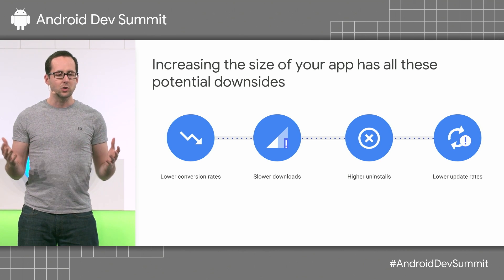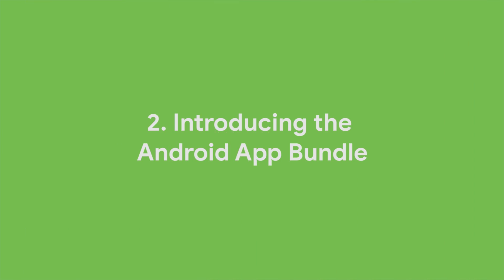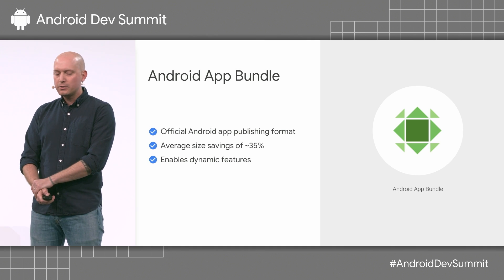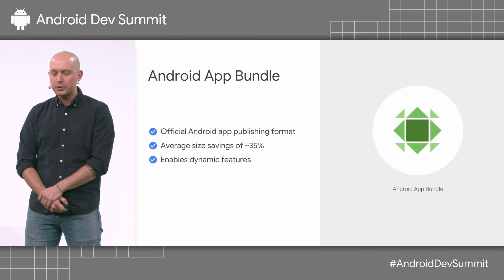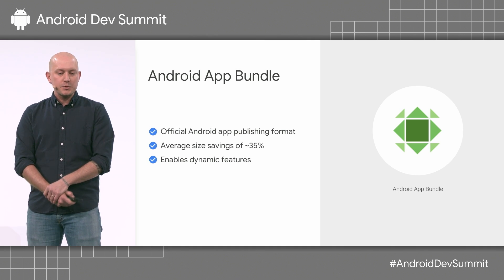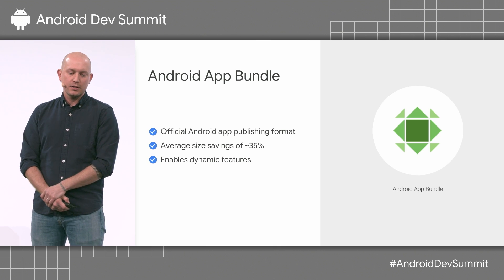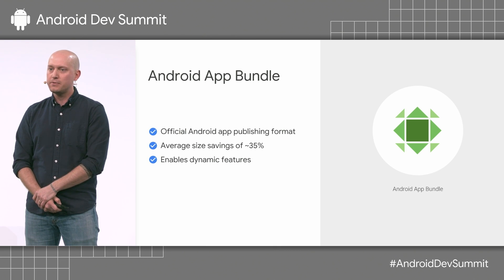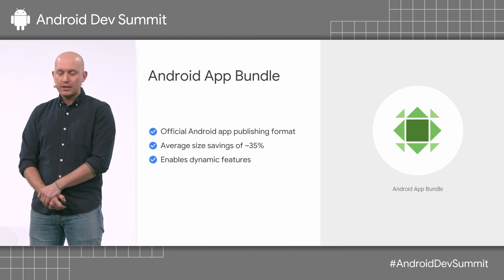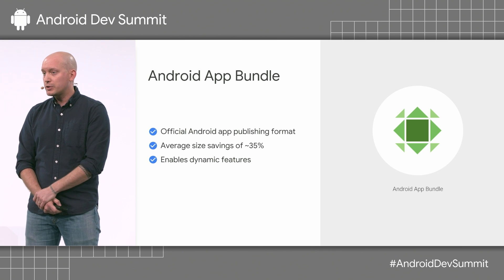We don't want you to have to worry about these trade-offs. The app bundle is the official Android app publishing format. Apps that have already adopted the bundle are seeing an average size saving of 35%. That's compared to a universal APK, and that's quite a lot.